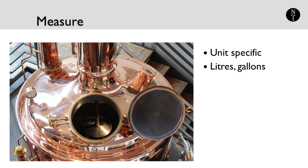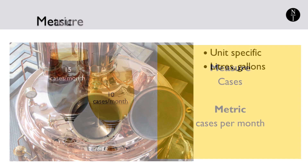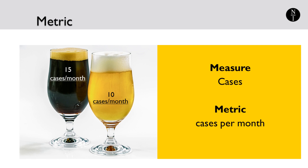A metric, on the other hand, is a quantifiable measurement that is used to track and assess the performance of a specific process. Generally, this is a rate of some sort. Here are a few examples from the same beer company. Perhaps the company sells 10 cases per month of light beer and 15 cases per month of dark beer. Cases per month is a metric constructed from our measure of cases.